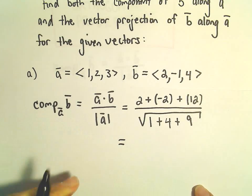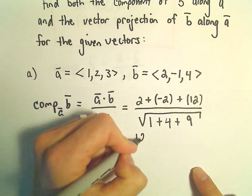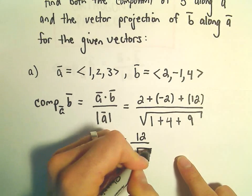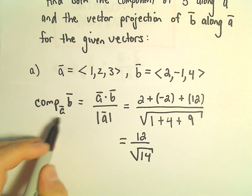And now we can just simplify this. So, 2 plus negative 2 is 0, we'll have 12 on top. In the denominator, we're going to have the square root of 14. So, that's our component of vector B along vector A.